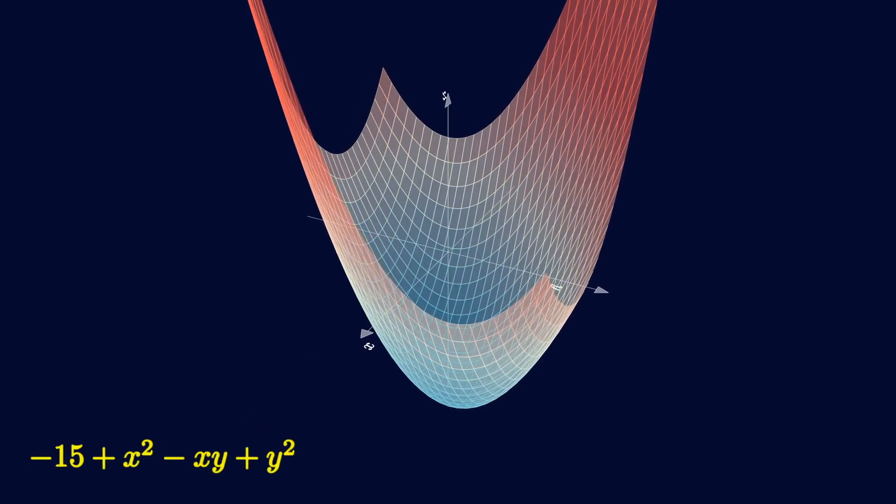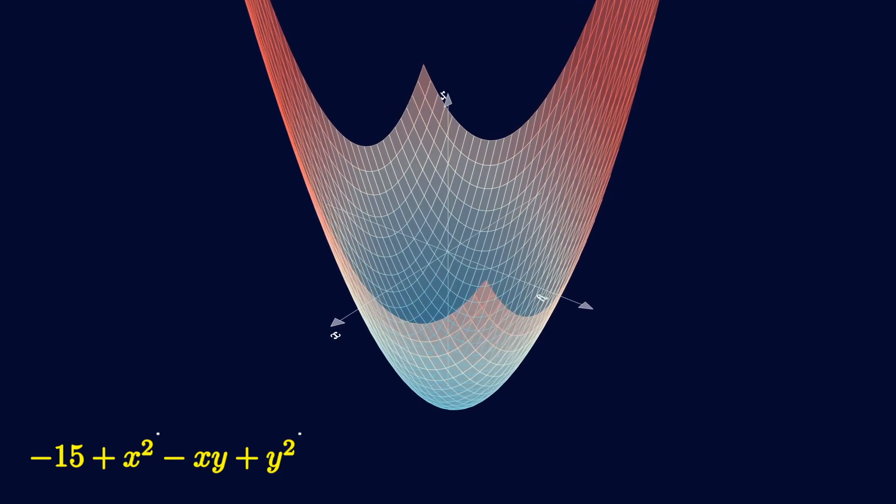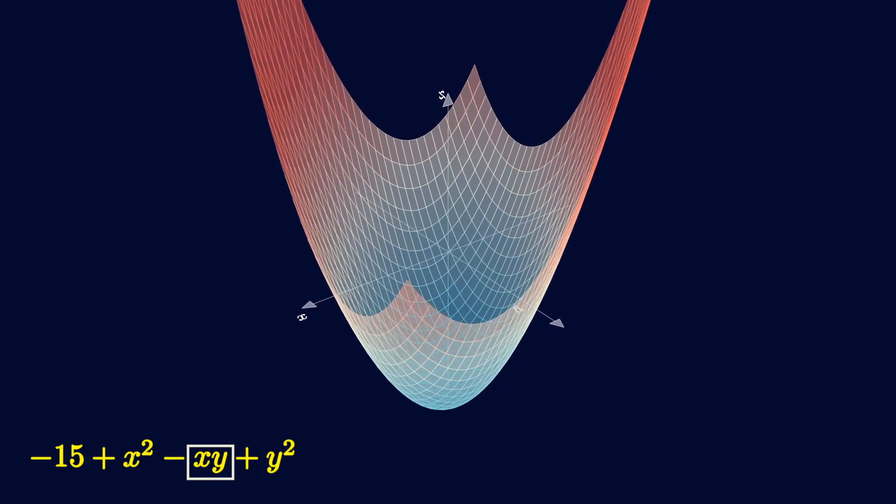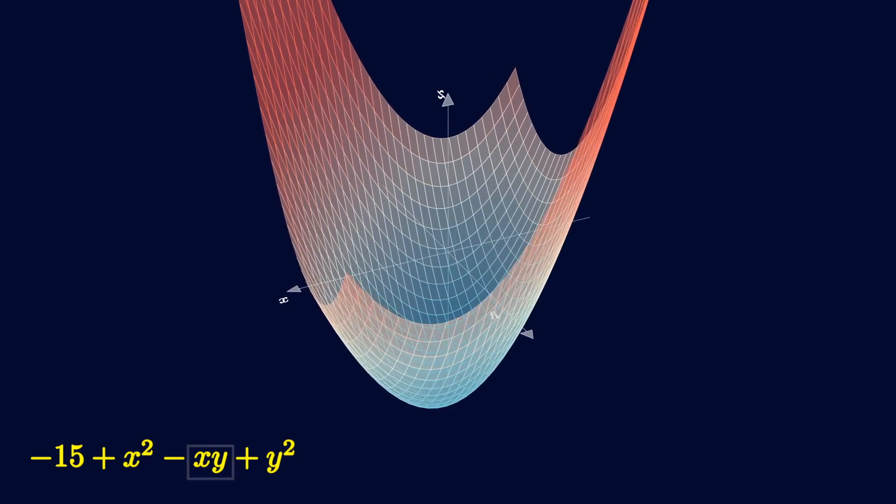Quadratic polynomials are a bit more complicated in that they have these additional terms x squared and y squared, as well as these cross terms x times y. For all of these terms, either the power is 2, or the sum of the powers is 2.